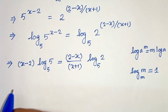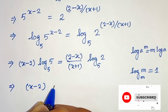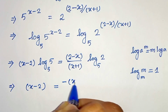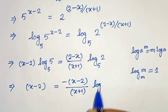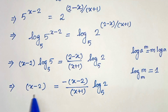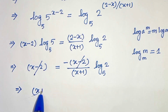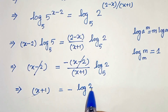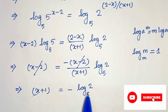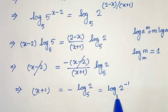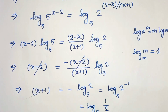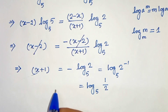So x minus 2 equals (2 minus x) divided by (x plus 1) times log base 5 of 2. Let's write 2 minus x as minus of (x minus 2). So x minus 2 equals minus (x minus 2) divided by (x plus 1) times log base 5 of 2. The (x minus 2) cancels on both sides. Multiplying both sides by (x plus 1), we get x plus 1 equals minus log base 5 of 2. And minus 1 times log base 5 of 2 can be written as log base 5 of 2 to the power minus 1, which is log base 5 of 1/2.